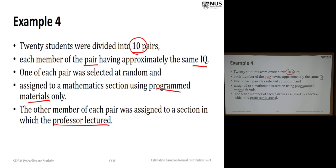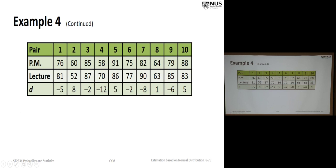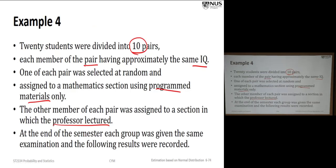Here is an example. We have 10 pairs, each member of the pair having approximately the same IQ. One from each pair is randomly assigned to a session using programmed materials and the other to a session with a professor lecturing. Given the same exam, the results are recorded. The differences are: minus 5, 8, and so on — some positive, some negative. We try to construct a 95% confidence interval from this.